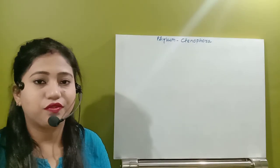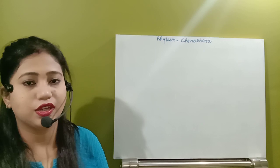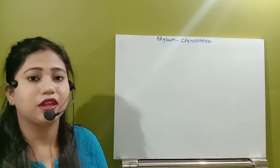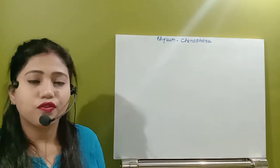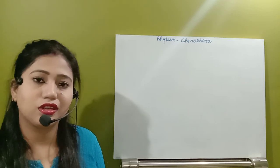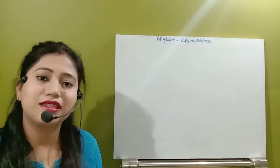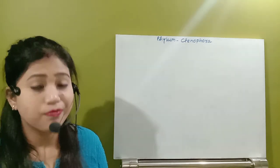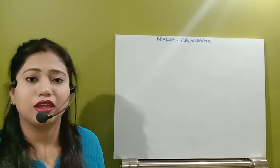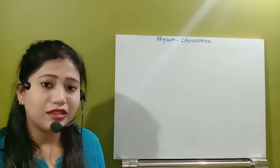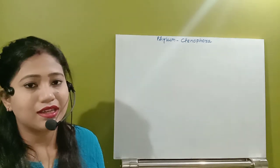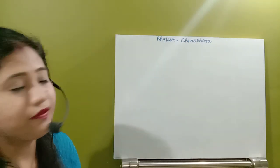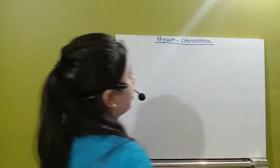Hello students, in the last video we discussed the phylum Cnidaria. Today we are going to start the next phylum. After Cnidaria is the Ctenophora. In the earlier classification, Ctenophores were also included under Cnidaria, but now due to various differences, modern scientists have completely separated that phylum in the animal kingdom, and now we have the third phylum that is Ctenophora.